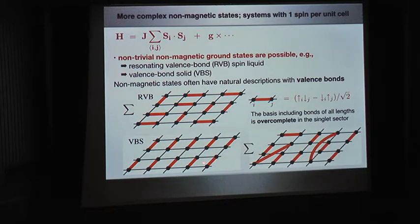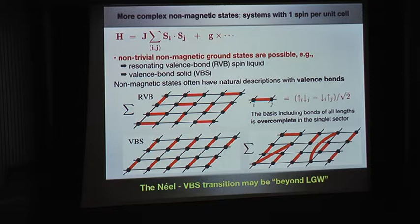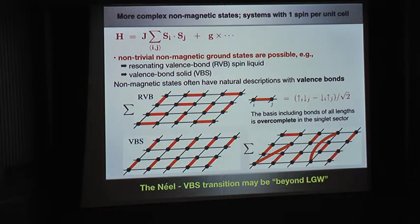The valence bond basis, if we include longer bonds, becomes a complete (even over-complete) basis of the singlet sector, allowing description of any singlet state. Today I will focus on VBS states and the phase transition from the Néel state into that state. It turns out this kind of phase transition may be beyond the standard Landau-Ginzburg-Wilson paradigm — that is the topic of Deconfined Criticality.